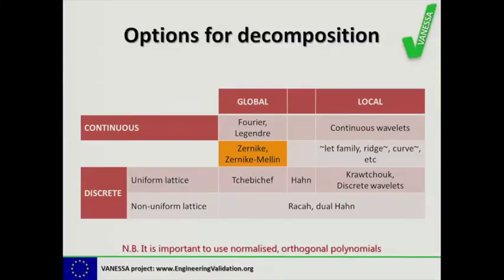In general, those towards the top right don't give us very much reduction in dimensionality unless we severely constrain them, whereas those towards the bottom left do give a large reduction in dimensionality. All of these are capable of being invariant to rotation, scale, and translation, providing we use normalized orthogonal polynomials. For the Chebyshev example shown, the Vanessa project produced a small MATLAB executable that will take a strain map expressed as an image, decompose it into a set of Chebyshev coefficients, and generate a feature vector. You can find this executable at www.engineeringvalidation.org.